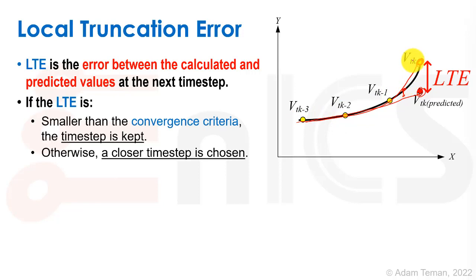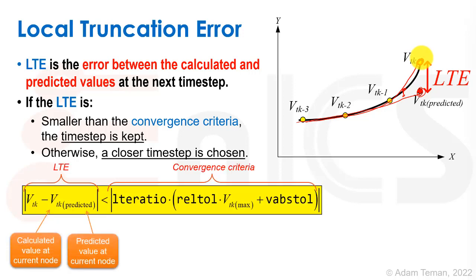If the LTE is smaller than the convergence criteria, the time step is kept. Otherwise, a closer time step is chosen. This is the convergence criteria, and it's surprisingly very similar to the convergence criteria we saw for DC op type of solution.